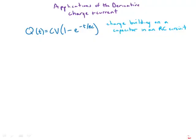This is another example of application of the derivative from physics. Q(t) = CV(1 - e^(-t/RC)). This is the equation for the charge building up on a capacitor in an RC circuit.